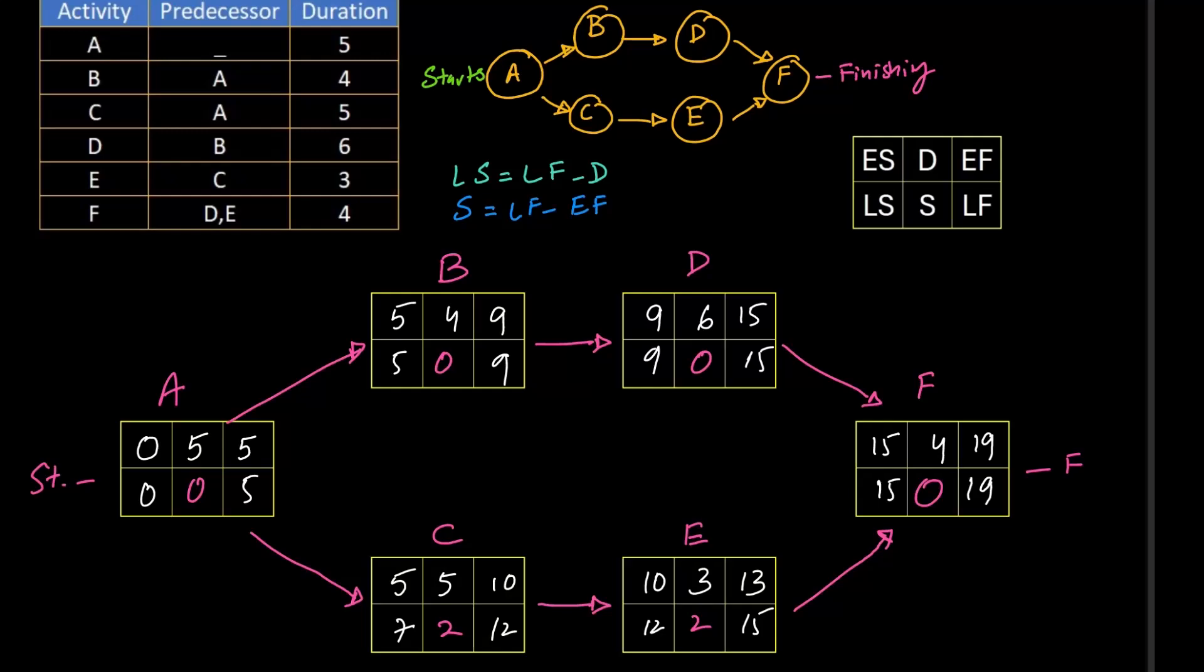On the other hand, if there is slack, like C has a slack of 2, means it can start on week 5 or week 7. Similarly, it can end on week 10 or week 12. E has a slack of 2 as well, means it can start on week 10 or 12, or end at 13th or 15th week.